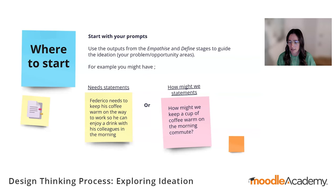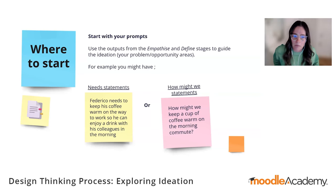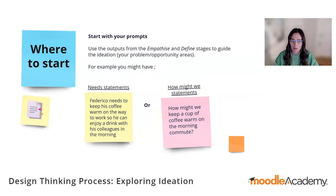These are ways to form the question around your problem or opportunity area to make them easier to work with, particularly when going into ideation. For example, a need statement might be: 'Federico needs to keep his coffee warm on the way to work so he can enjoy a drink with his colleagues in the morning.' Or if we craft that as a how might we statement: 'How might we keep a cup of coffee warm on the morning commute?' These are the things we recommend taking into your ideation.